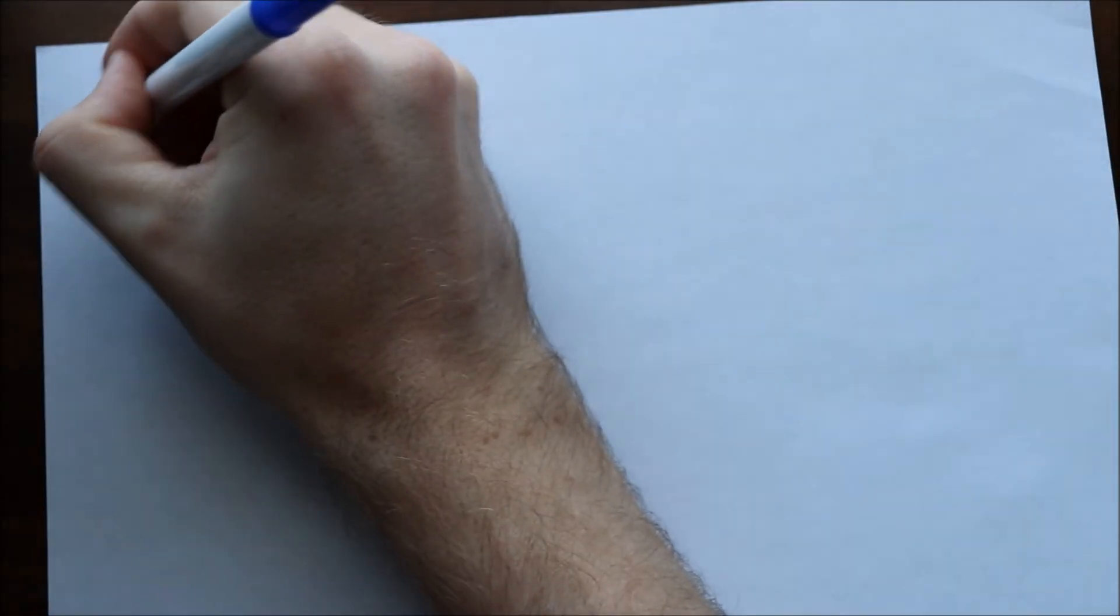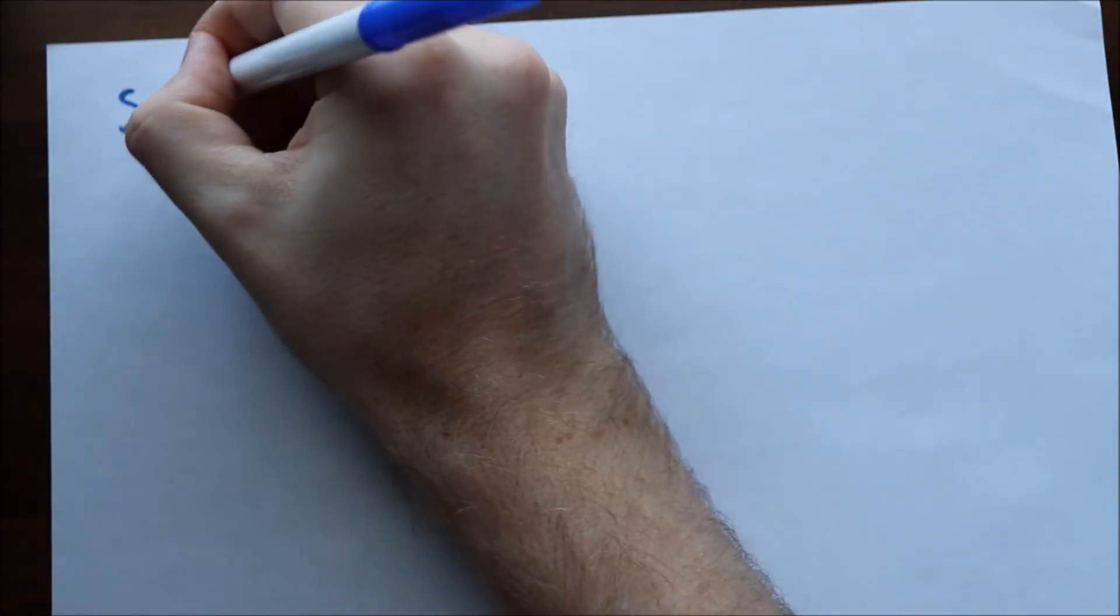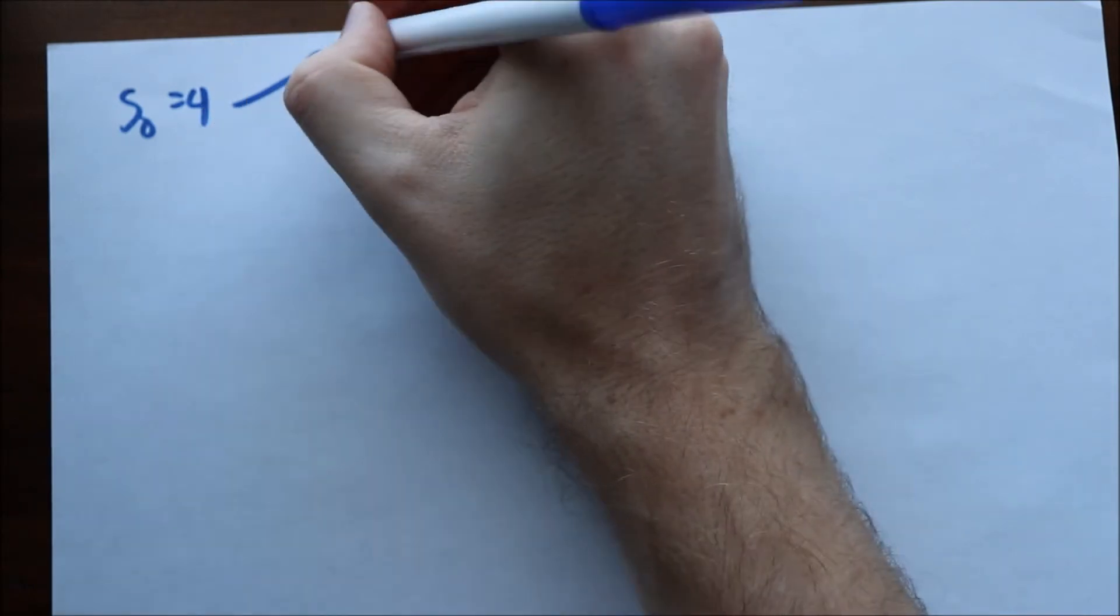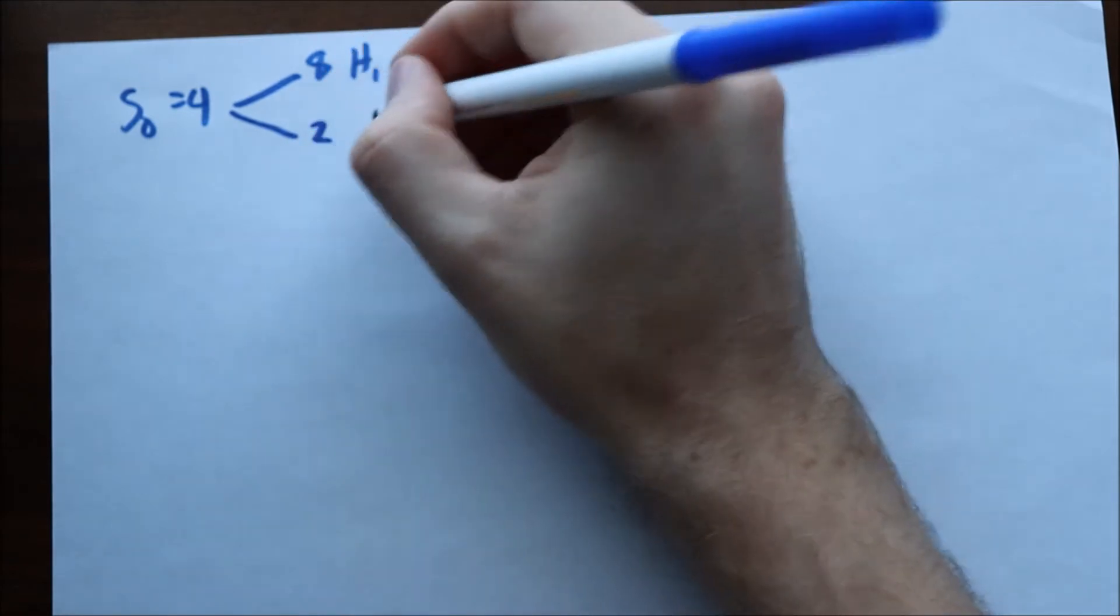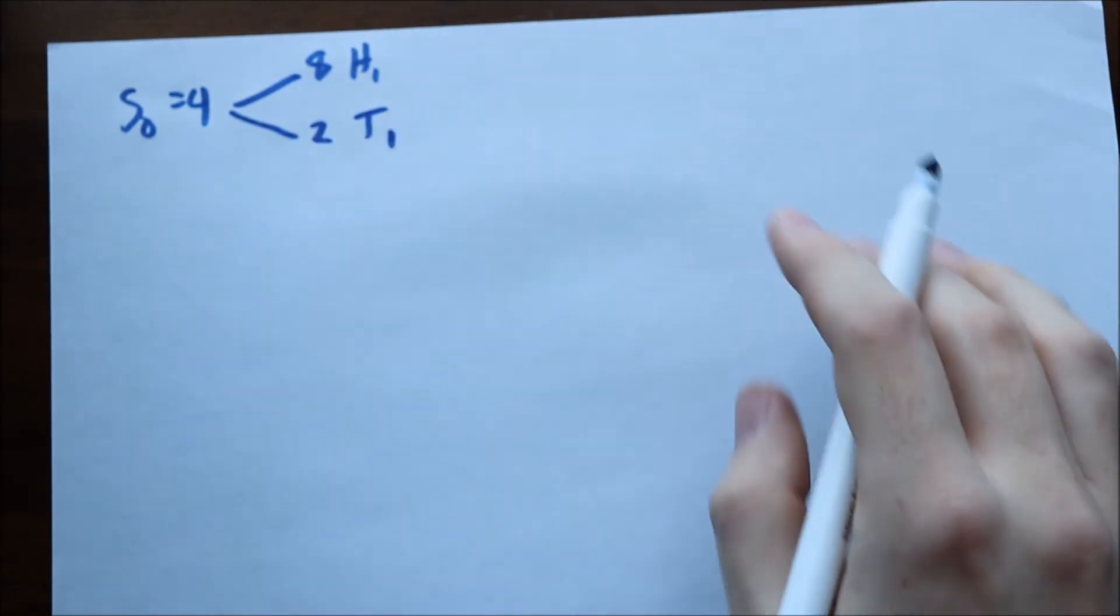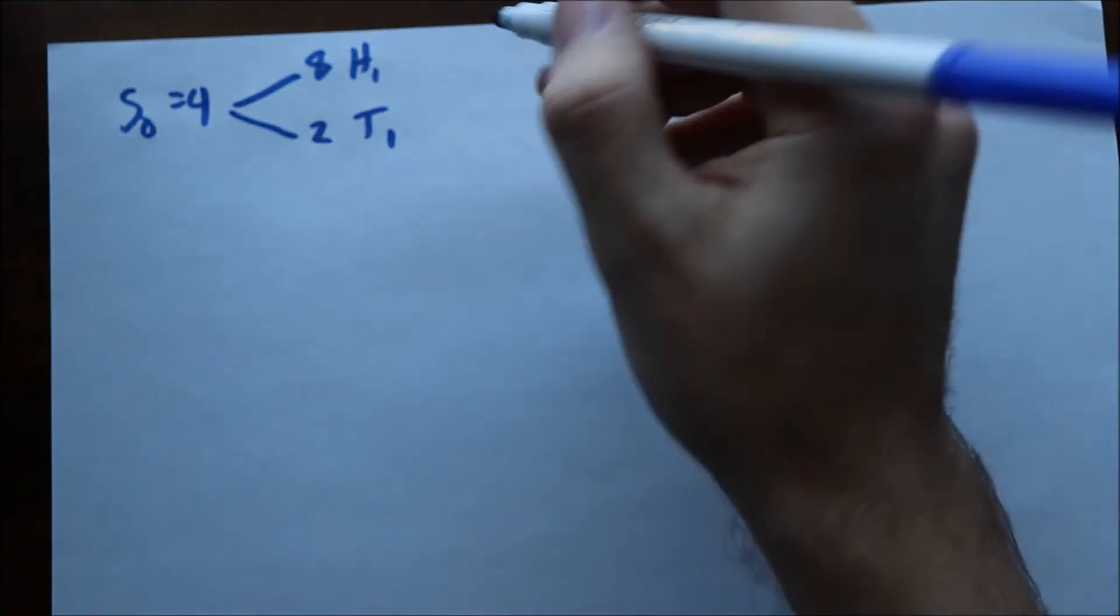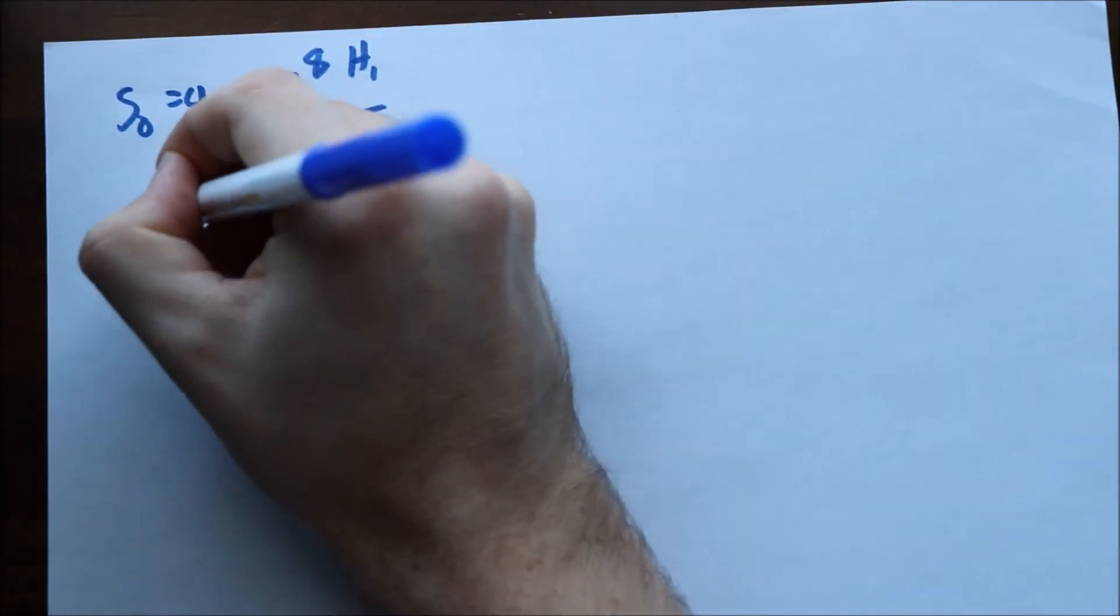Okay, so in this example, let's set up the exact same problem like we did. We have S of 0 equals 4, at time 1 our heads at time 1 is 8. If the stock price goes down, you have a value of 2, at tail is 1. Again, the strike price equals 5.